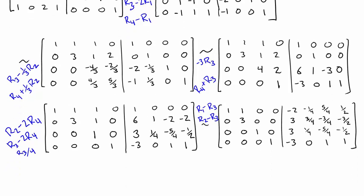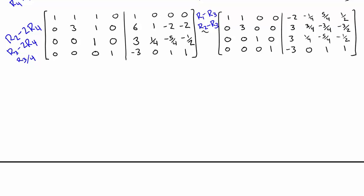And now we'll put a pivot of 1 by dividing R2 by 3. So we'll do that up there.